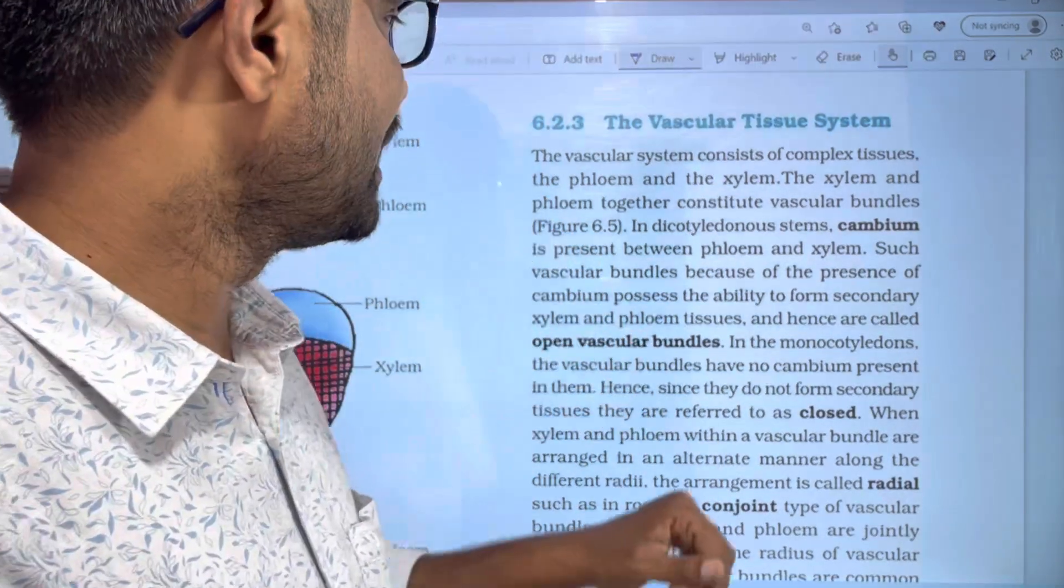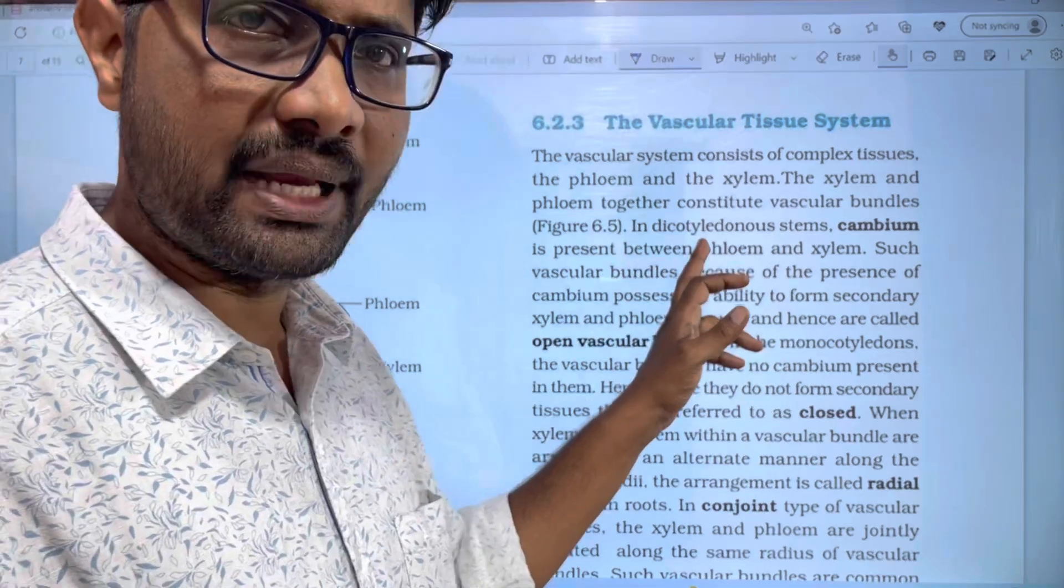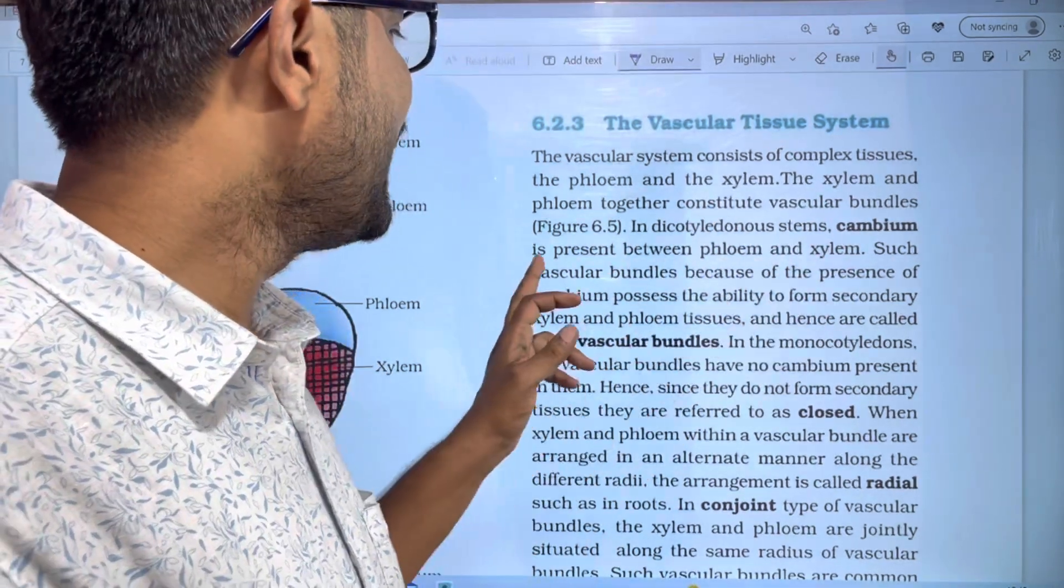Open vascular bundles are found in dicot plant stems where cambium is present.